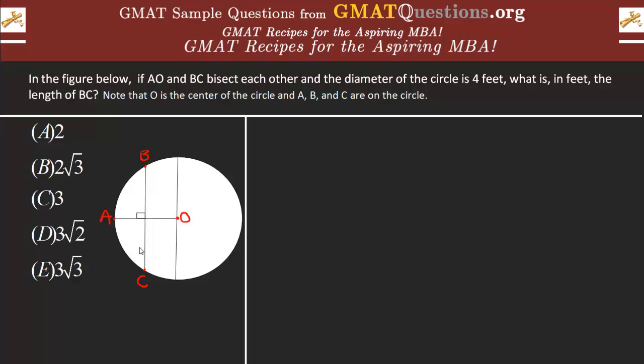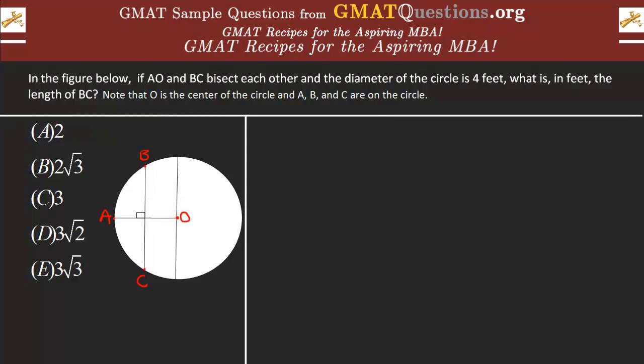You gotta ask yourself: how can we actually get BC? Maybe we cannot get BC directly, but possibly we can get it indirectly. What I'm gonna do here is draw maybe the radius. We know that this particular length here is 4, so if I connect maybe O and C here, we get the radius of the circle.